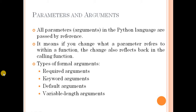Arguments in Python use run-time methods: passed-by-reference and passed-by-value. In the Python programming language, all parameters use the passed-by-reference method. That means if you change what a parameter refers to within a function, the change also reflects back in the calling function.